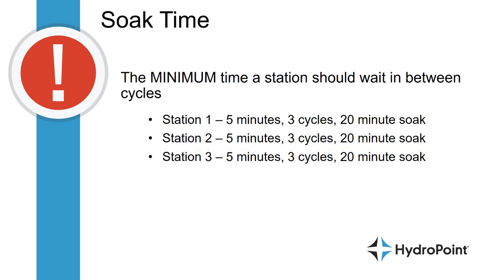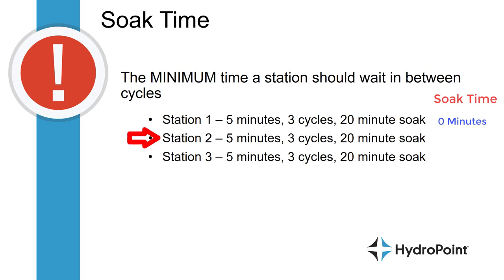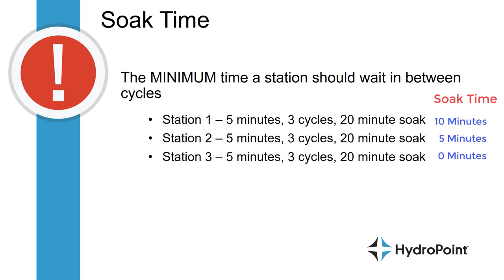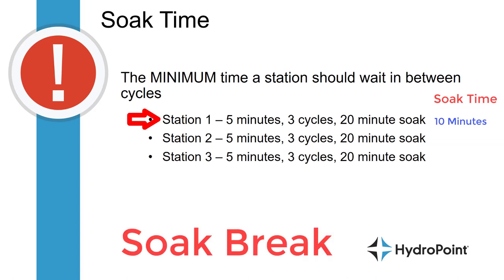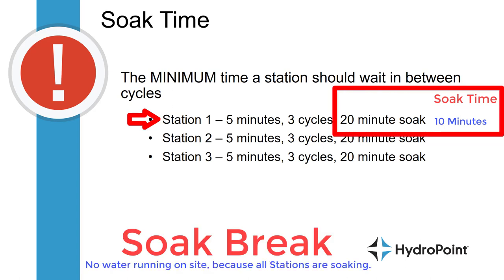So if you have a 3-station controller where each station is programmed to run 5 minutes 3 times with a 20-minute soak, at your programmed start time station 1 would turn on, irrigate its 5 minutes, and then begin its 20-minute soak time. While station 1 is soaking, station 2 will come on and deliver its 5 minutes of irrigation, finish that and start its soak time, then station 3. But when station 3 finishes its first cycle, station 1 will have only been soaking for 10 minutes. Since station 1 is next in the queue, the WeatherTrack is going to wait the additional 10 minutes to make sure that minimum 20-minute soak time has been met.